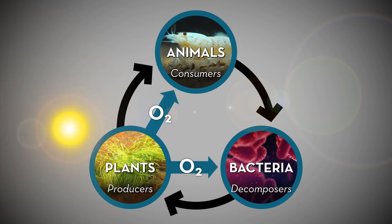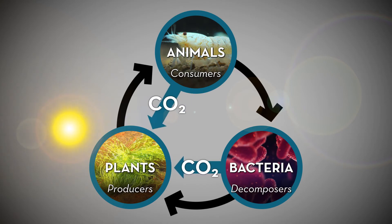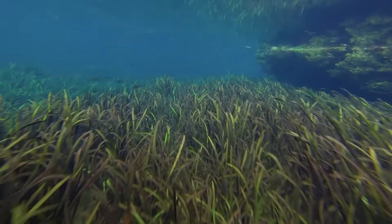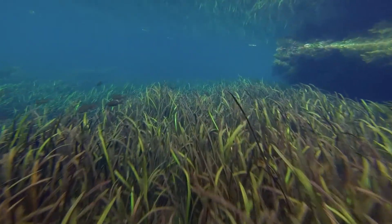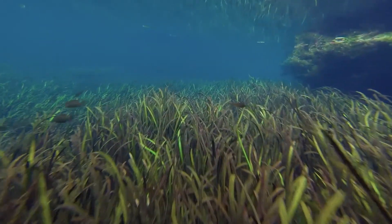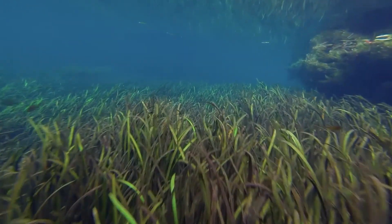Terrestrial and aquatic plants provide oxygen for animals to breathe and take up the carbon dioxide they release. Fun fact: 50 percent of the oxygen we breathe comes from plants and algae in the water.